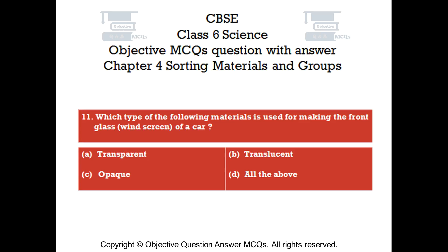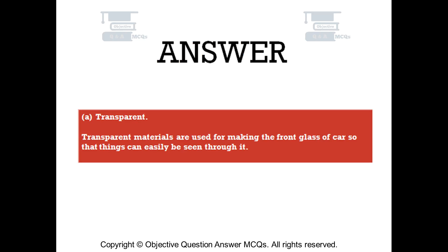Question number 11. Which type of material is used for making the front glass (windscreen) of a car? Option A: Transparent. Option B: Translucent. Option C: Opaque. Option D: All of the above. The right answer is Option A — Transparent. Transparent materials are used for making the front glass of a car, so that things can easily be seen through it.